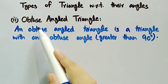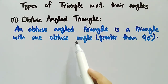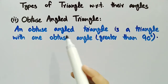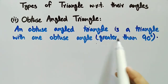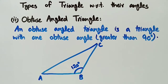The second type is obtuse angle triangle. An obtuse angle triangle is a triangle with one obtuse angle, meaning that one angle of the triangle is greater than 90 degrees. For example, consider this triangle. It is an obtuse angle triangle because its one angle is 120 degrees, which is greater than 90 degrees. We know that no triangle can have more than one obtuse angle, because the sum of all three angles of a triangle must be 180 degrees.